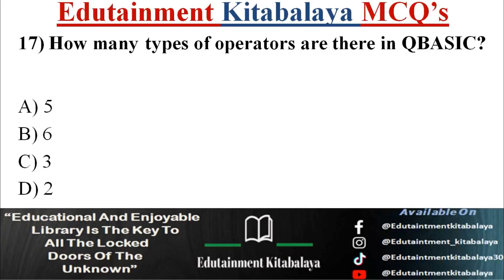Question number 17. How many types of operators are there in BASIC? A. 5. B. 6. C. 3. D. 2. Correct answer is D. 2.